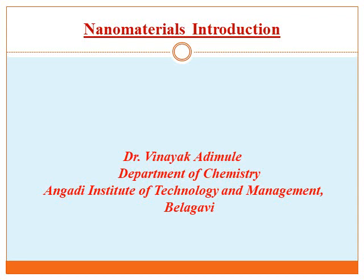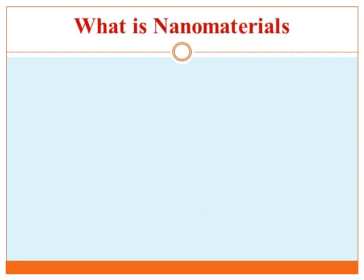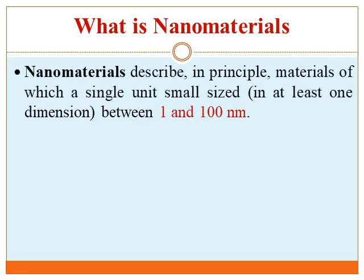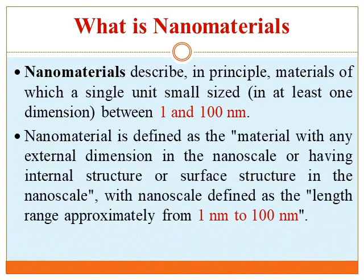Good morning dear students. Today we will discuss about nanomaterials. Nanomaterials are materials whose internal or external dimension is in between 1 to 100 nanometers — that is, 10 to the power of minus 9 meters. A material is defined as a nanomaterial when any of its external dimensions falls in the nanoscale range.